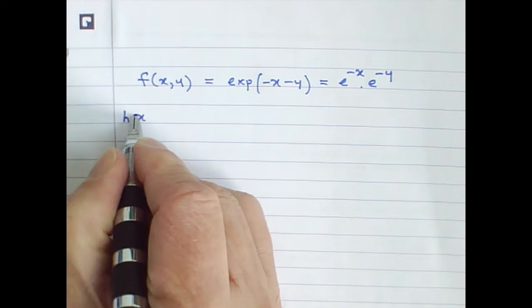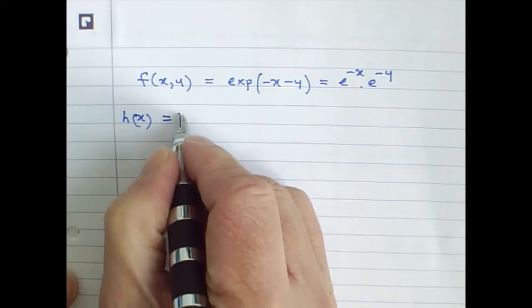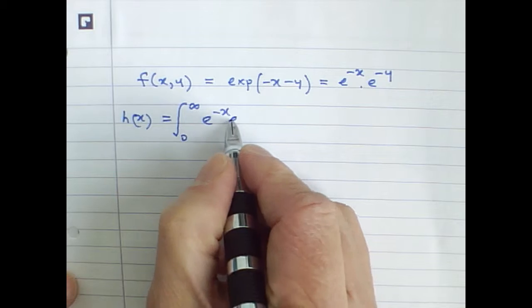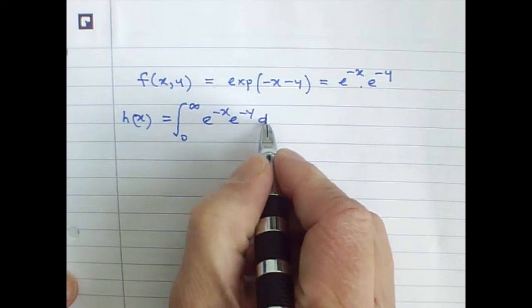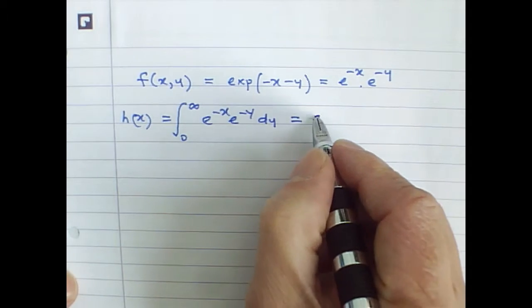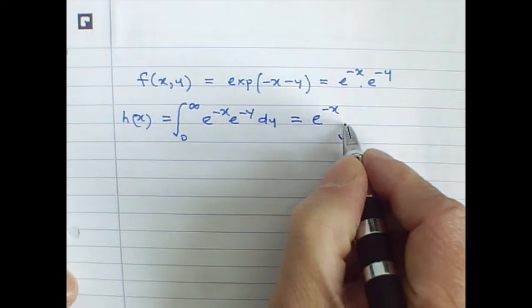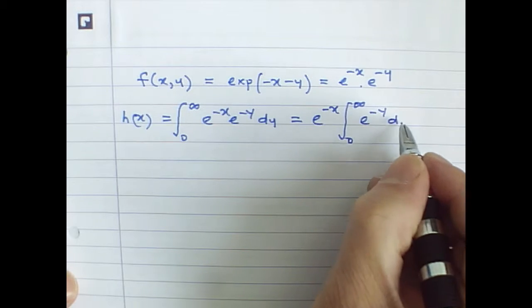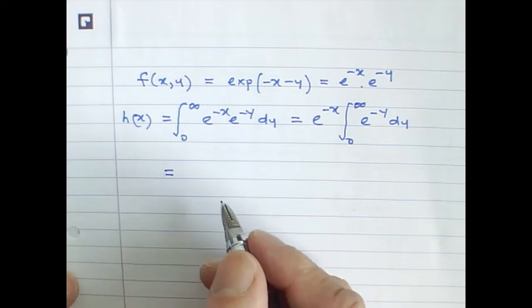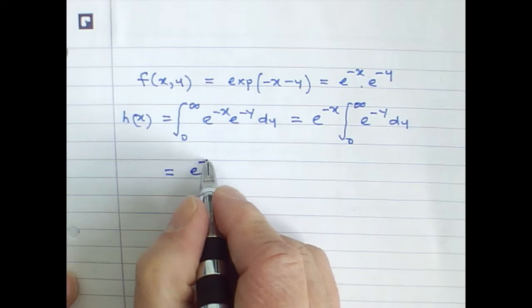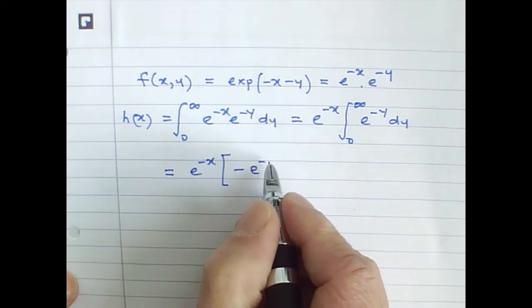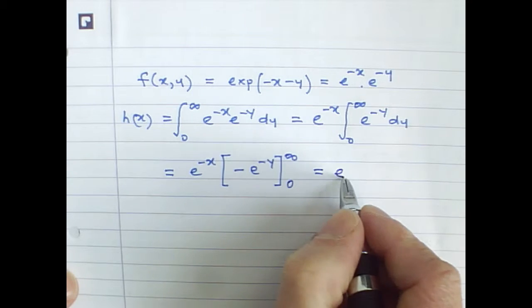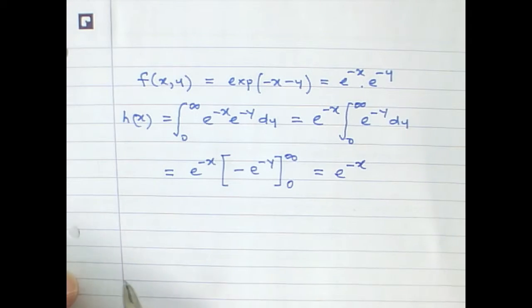Now we can calculate the marginal distribution for x by integrating over the range 0 to infinity. Of course we can take the e^(-x) outside this integral, and just integrate e^(-y) with respect to y. That gives us e^(-x) multiplied by the integral, which is -e^(-y) between the limits infinity and 0, which simplifies to e^(-x).